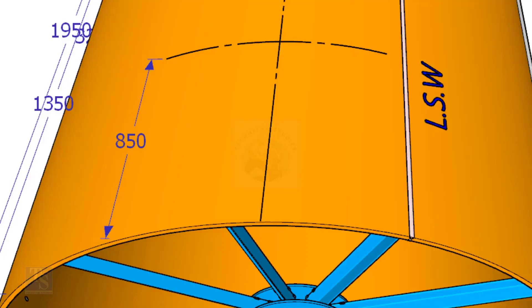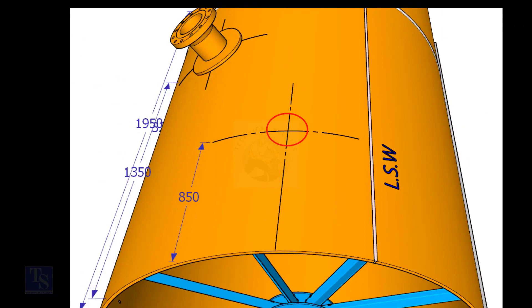Mark the same distance roughly 850 millimeters away from the end of the shell and draw a line. Now mark 850 millimeters exactly on this line from the end of the shell as shown. This is the center of nozzle N1.